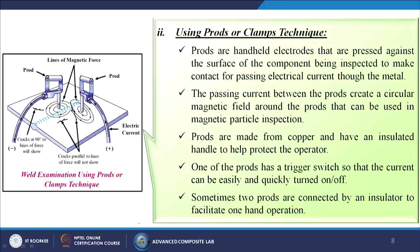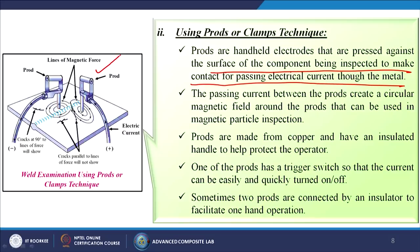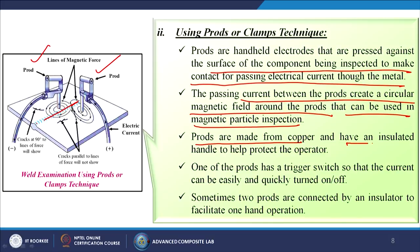The second direct magnetization technique uses prods or clamps. Prods are handheld electrodes that are pressed against the surface of the component being inspected to make contact for passing electrical current through the metal. In this case it is a handheld instrument — you can easily carry it and use it wherever you need to perform the test. We can see here that this is being used to test weld samples — two parts joined together, with the welding zone in between. The passing current between the prods creates a circular magnetic field around the prods. Prods are made from copper and have an insulated handle to protect the operator.